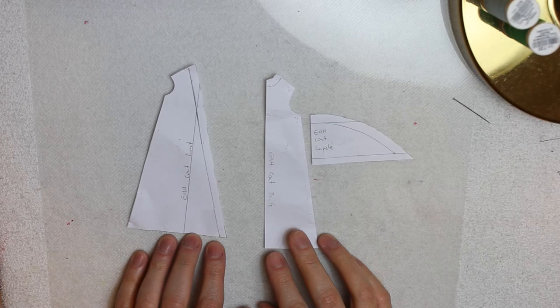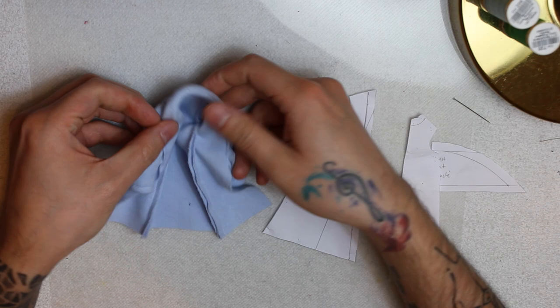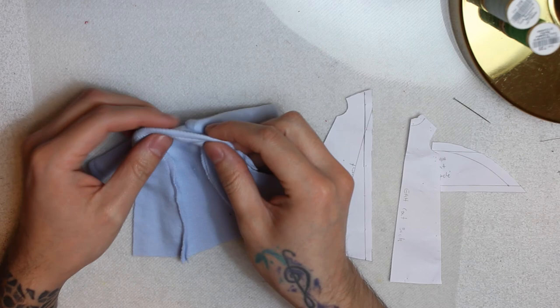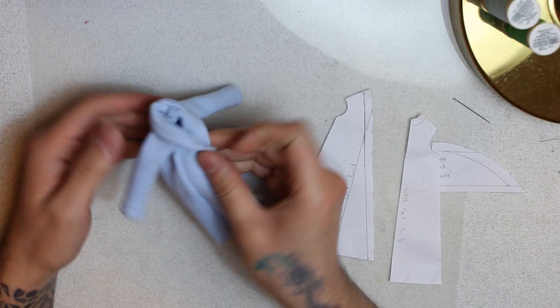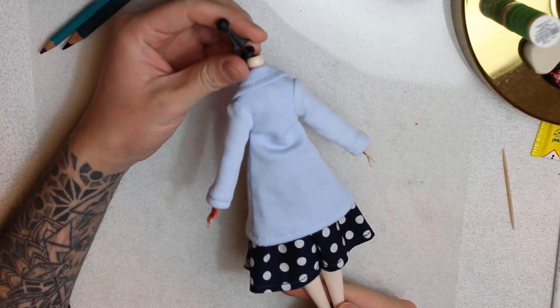For her coat, I made these patterns: front, back, and the lapel. I cut it on a baby blue fabric, but the fit wasn't very good and the lapel was very tiny. So I repeat everything one more time. And here you have it, a perfectly fitted coat.